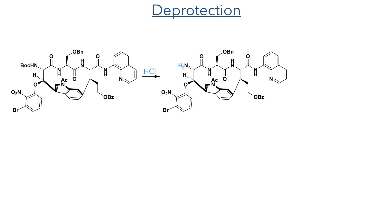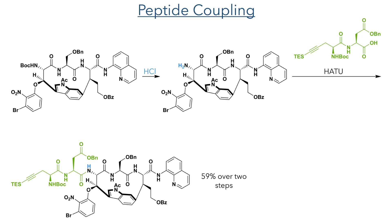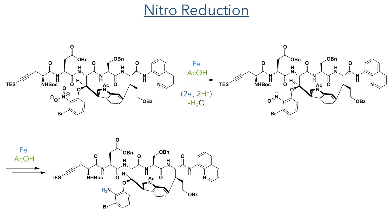Taking this forward, the BOC group was deprotected with hydrochloric acid and the resulting amine was coupled with building block B again using HATU. The nitro group could then be reduced to reveal the desired amine. This was done using iron and acetic acid. The acid protonates the nitro group while the iron acts as a reducing agent and supplies electrons, allowing for the elimination of water to form a nitroso intermediate. Further reduction produces the amine.